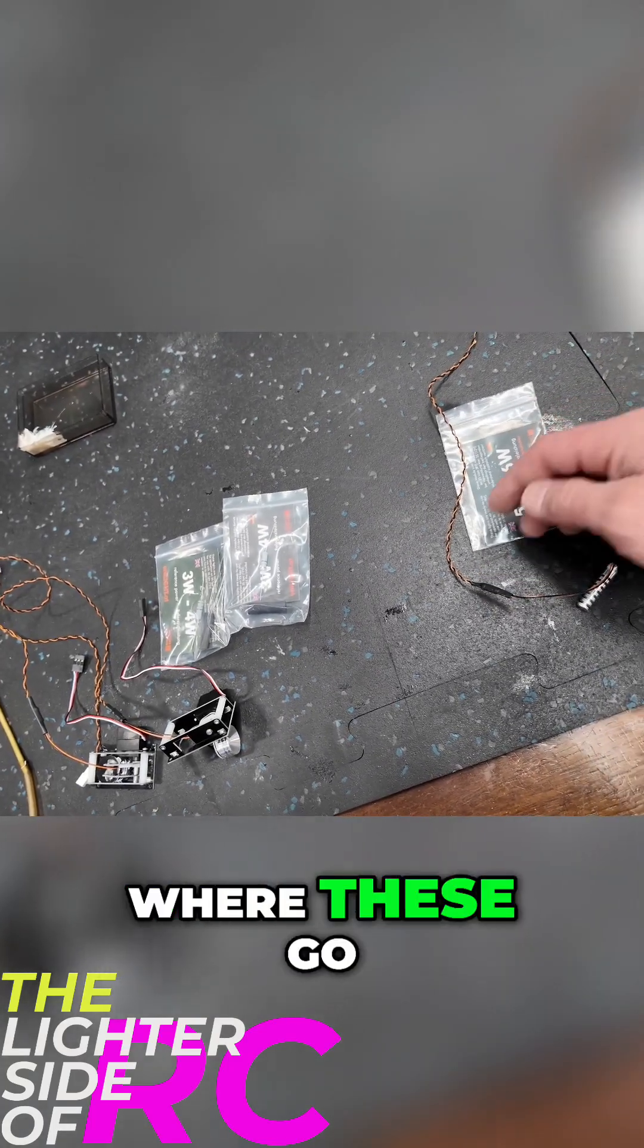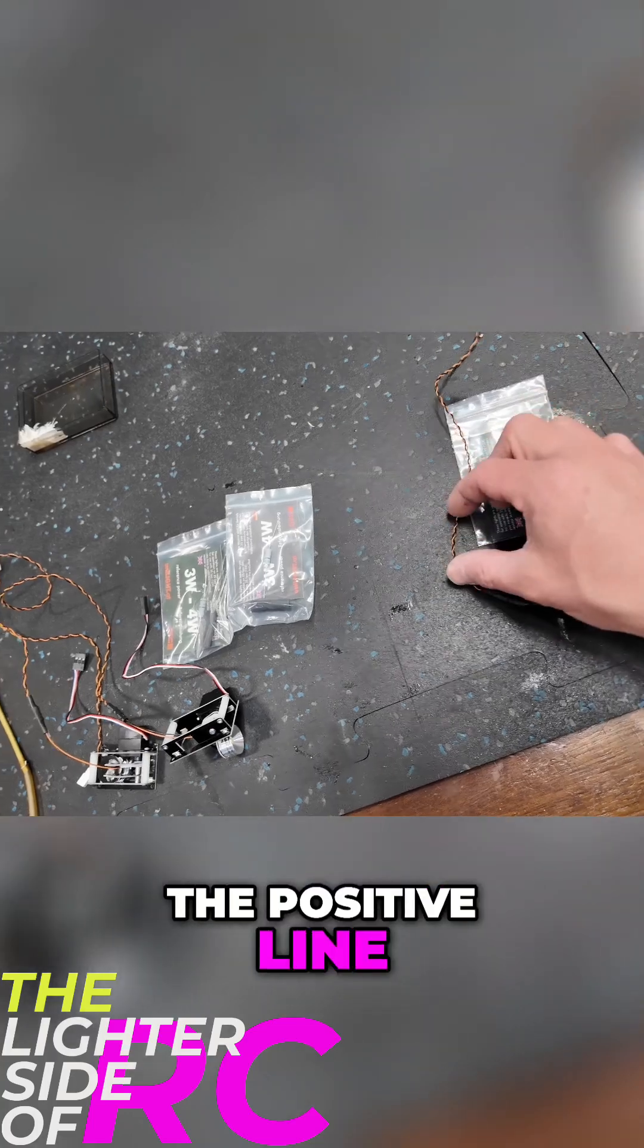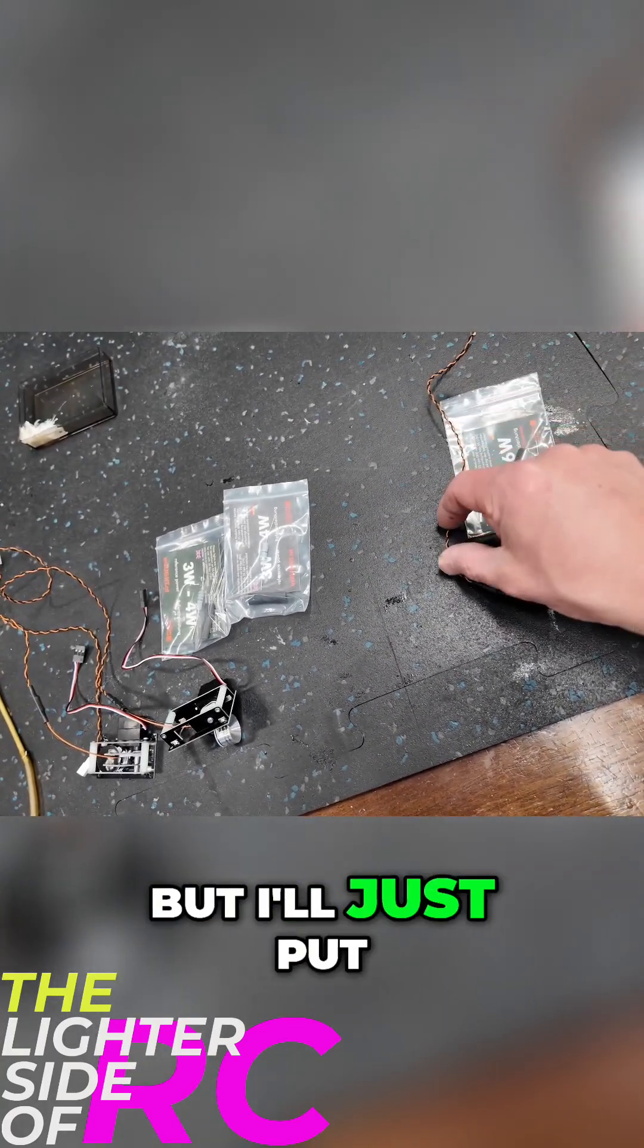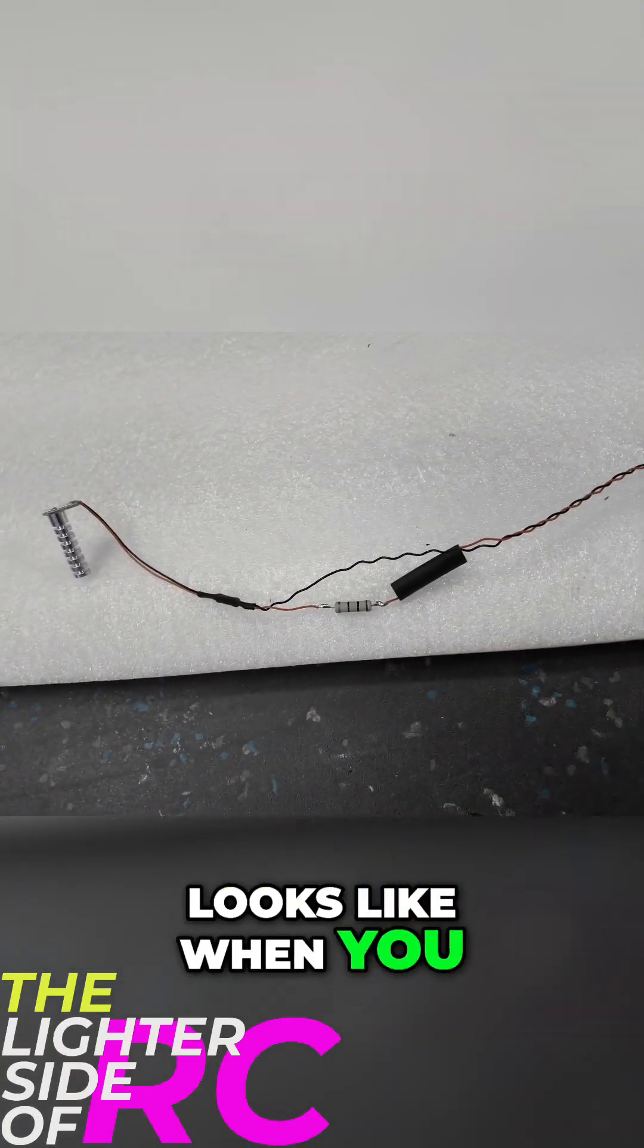It doesn't really matter where these go, but I install them on the orange line, the positive line. You can install them really anywhere in the line, but I'll put it right here after the existing resistor that's already in there.